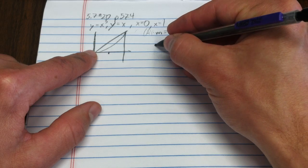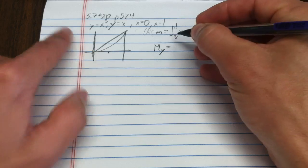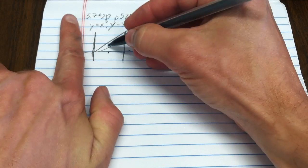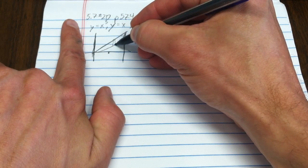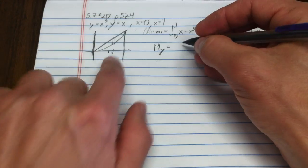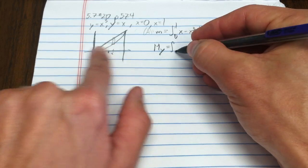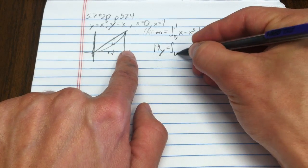Now I need the moment about the y-axis first. That's how far to the right it is. I'm thinking about a little rectangle here. If I had a rectangle out at x, what would be the moment of that? I've got to take those little rectangles from 0 to 1.